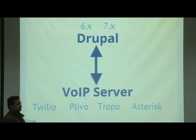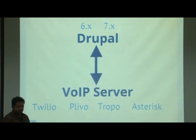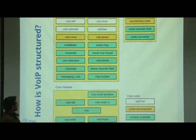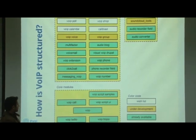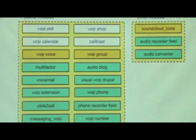For the VoIP server there are two things you can do: either use a third-party service like Twilio, Plevo, or Tropo, or you can set up your own server like Asterisk, which is open source and free. The core module when you download the VoIP module gives you modules for calling scripts, UIs, some samples, and basic integration with Twilio, Tropo, and Plevo — you just enable the modules, configure, and it will work.